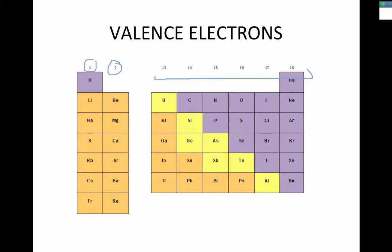So in the boron family you've got three valence electrons, and in the carbon family there are four valence electrons. Nitrogen and the elements in that family have five valence electrons. Oxygen down to polonium have six valence electrons. The halogens have seven valence electrons. The noble gases have eight valence electrons — the only exception is helium, which has two valence electrons.